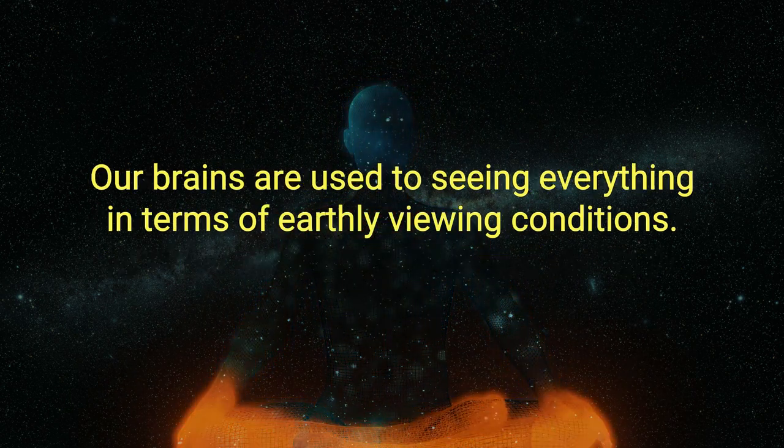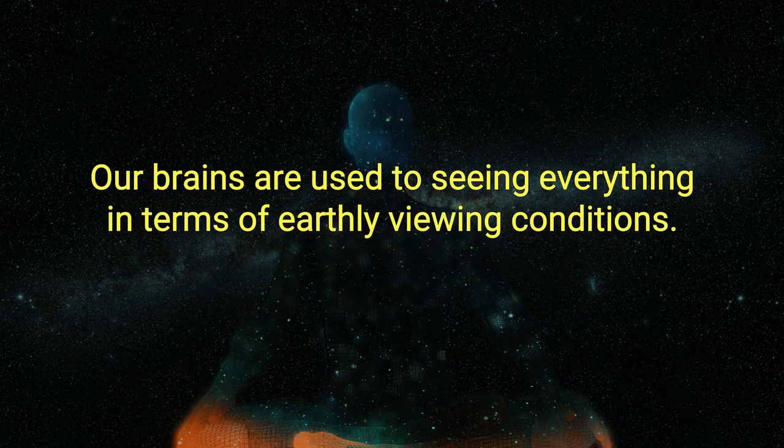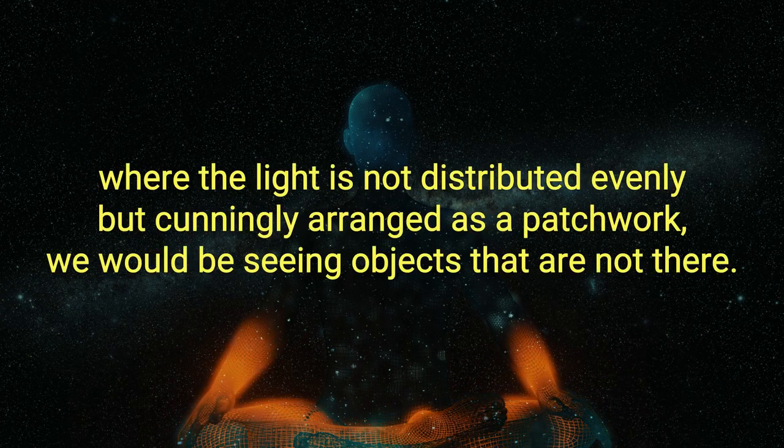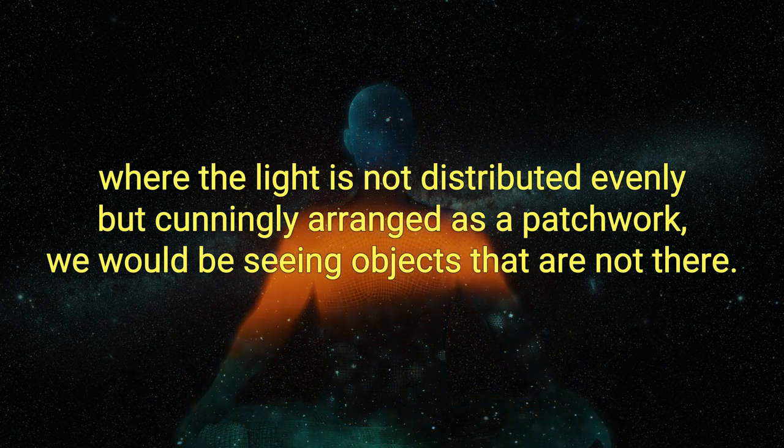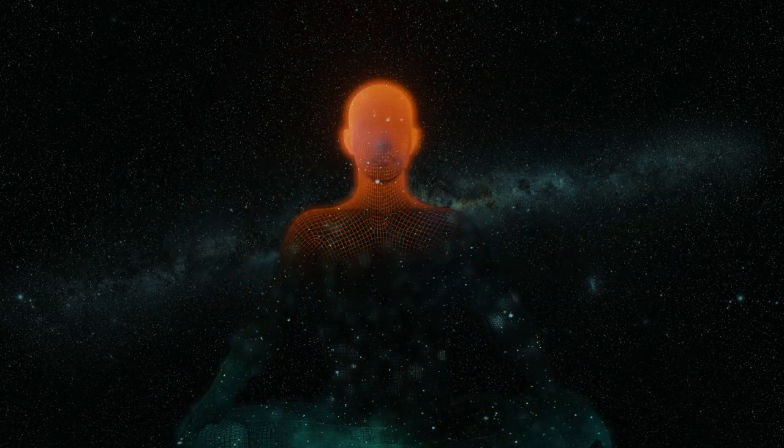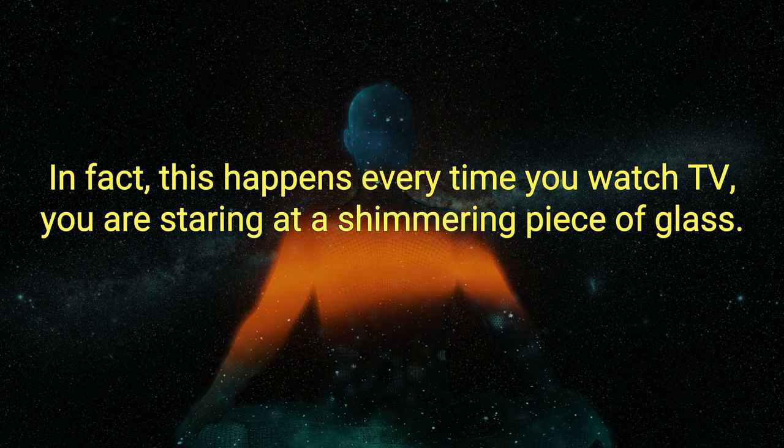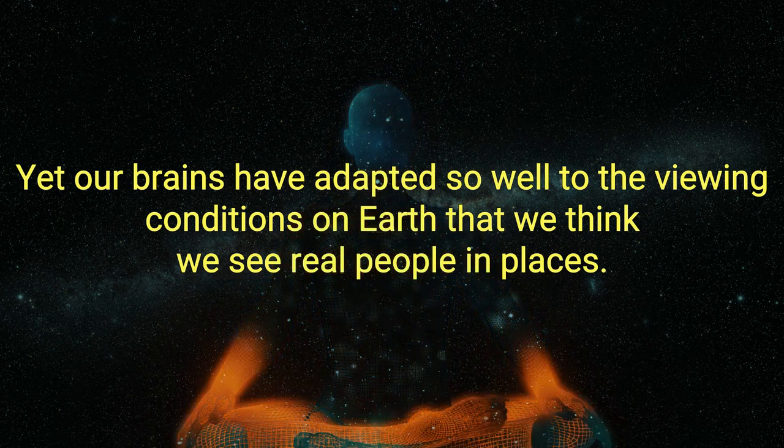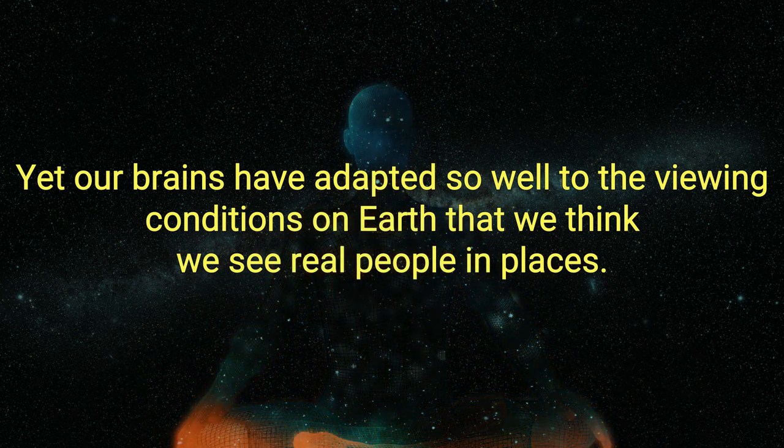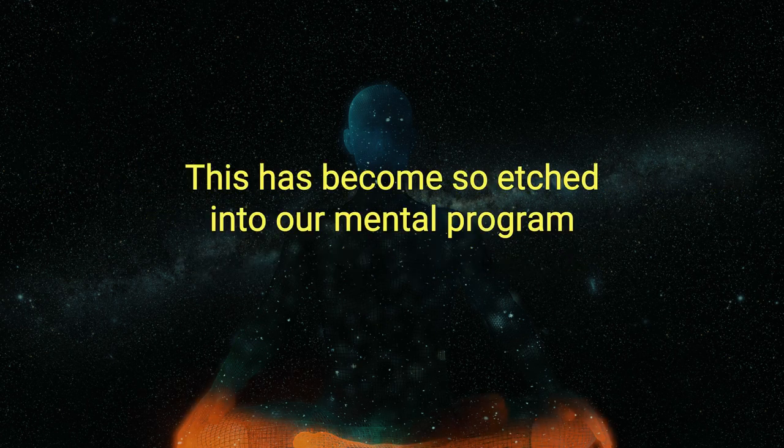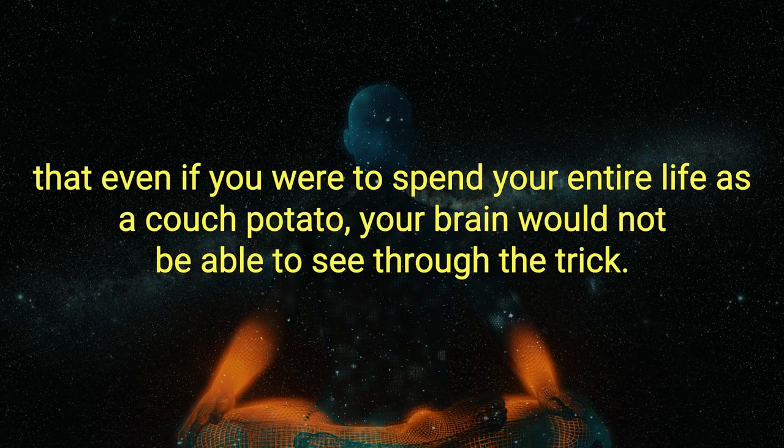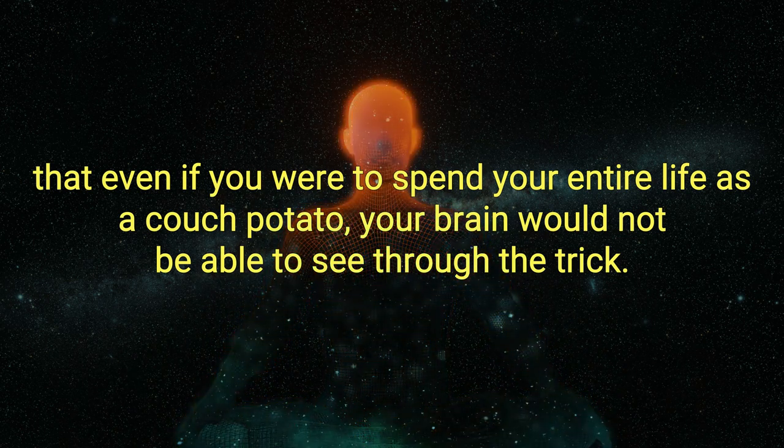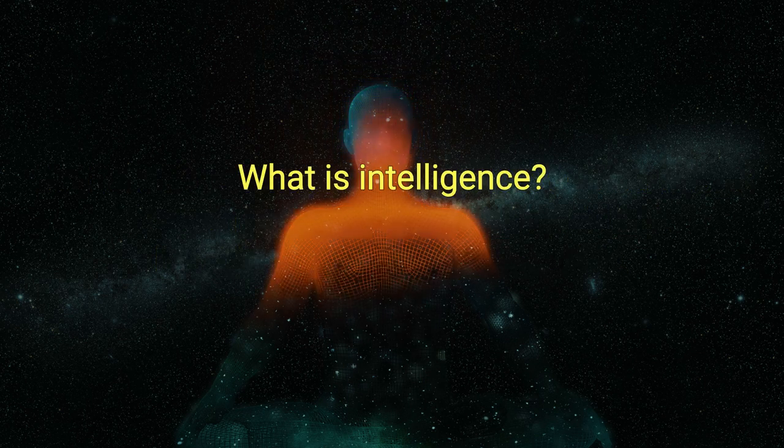Our brains are used to seeing everything in terms of earthly viewing conditions. If we were to be transported to a different planet, however, where the light is not distributed evenly, but cunningly arranged as a patchwork, we would be seeing objects that are not there. In fact, this happens every time you watch TV. You are staring at a shimmering piece of glass, yet our brains have adapted so well to the viewing conditions on Earth that we think we see real people and places. This has become so etched into our mental program that even if you were to spend your entire life as a couch potato, your brain would not be able to see through the trick.